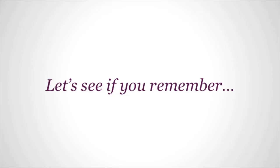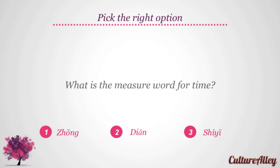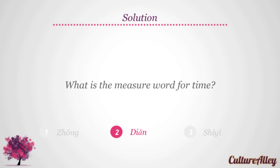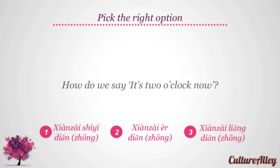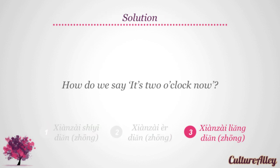It's quiz time! What is the measure word for time? Is it zhōng, or is it dien, or could it be shí yī? The measure word for time is dien. How do we say 'it's two o'clock now'? Do we say xiàn zài shí yī dien zhōng, or xiàn zài er dien zhōng, or xiàn zài liǎng dien zhōng? The correct answer is xiàn zài liǎng dien zhōng.